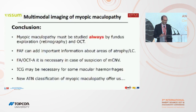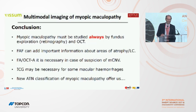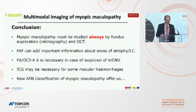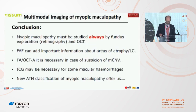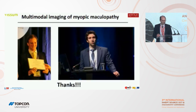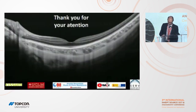In conclusion, myopic maculopathy must always be studied by fundus examination, retinography, and OCT. Fundus autofluorescence can help study the retinal pigment epithelium. Fluorescein angiography or OCT-A is necessary in cases of suspected myopic CNV, while ICG is only necessary in very few cases. The new ATN classification of myopic maculopathy offers good information about the pathology of our myopic patients, not only at a single moment but also for tracking evolution over time, and it is possible to share this information to follow patients in the clinic. I want to thank my collaborators and everybody for your kind attention.